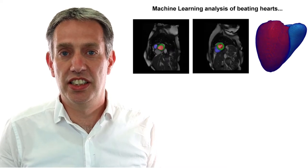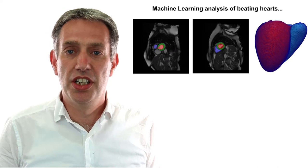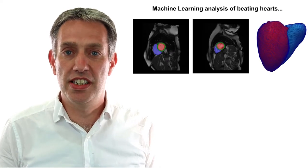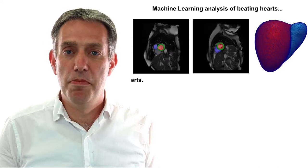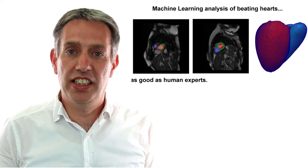Cardiovascular disease is one of the biggest killers in the western world. In our group we use magnetic resonance imaging of the cardiovascular system to identify potential diseases. Many of our techniques for identifying diseases and performing image analysis use state-of-the-art machine learning tools.